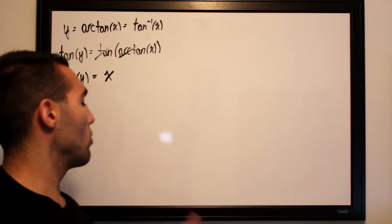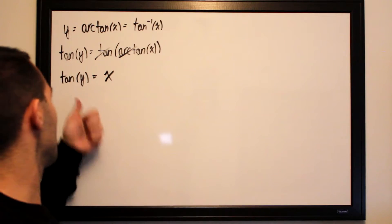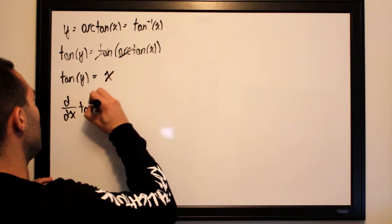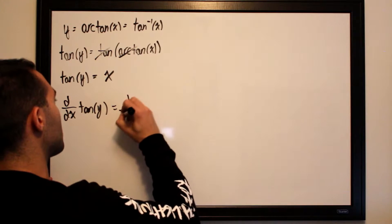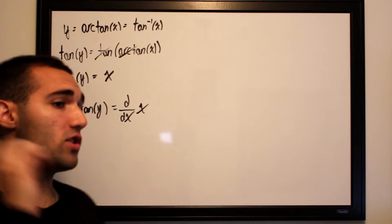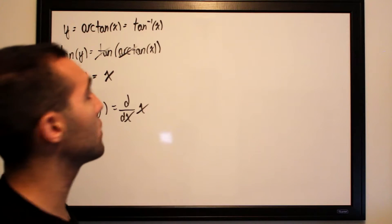So now we will take the derivative of both sides with respect to x, where d/dx of tangent of y equals d/dx of x. And we will be differentiating this using the chain rule, where y will be trapped within a tangent function.